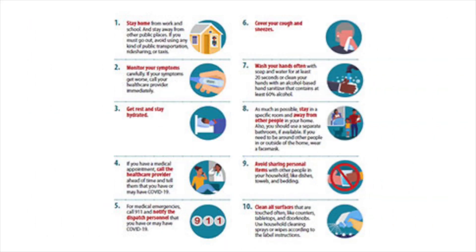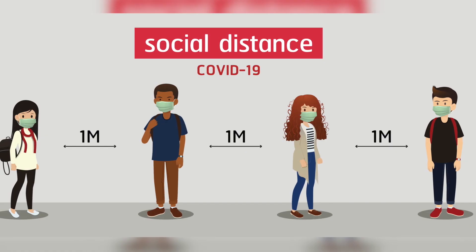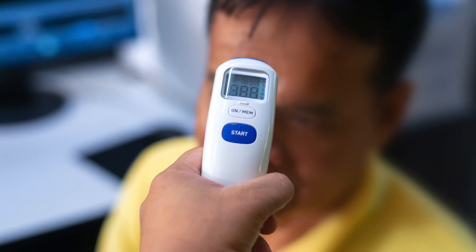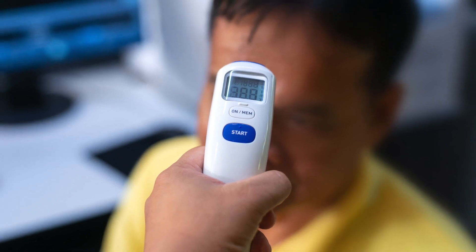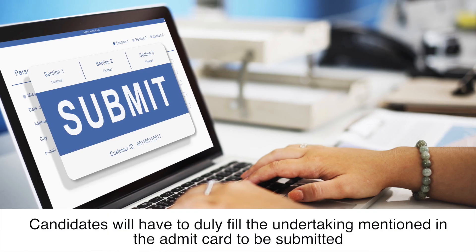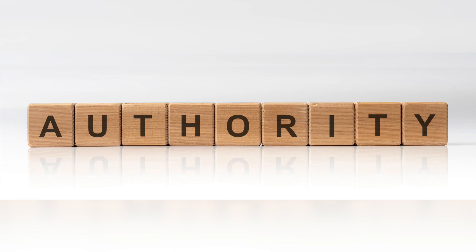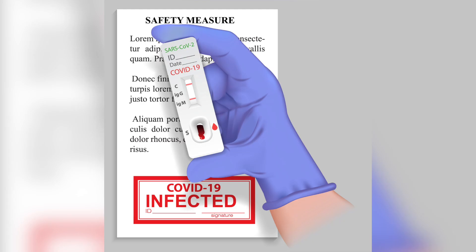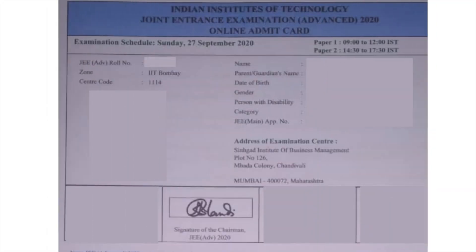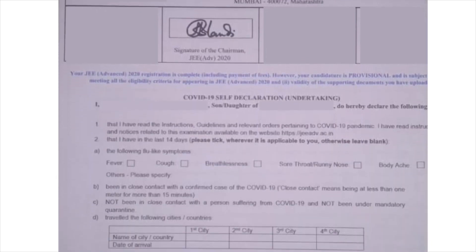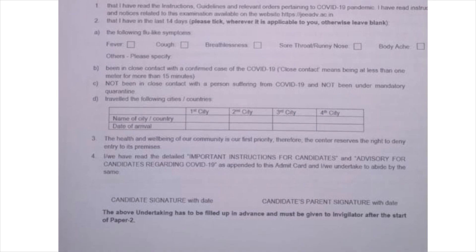COVID-19 related guidelines in JEE Advance Exam Centre: Candidates will have to follow the social distancing norms at the exam centre. There will be a temperature check at the entry gate using thermoguns. Candidates will have to duly fill the undertaking mentioned in the Admit Card to be submitted to the exam centre authorities, so that COVID-19 infected or suspected candidates can be segregated and seated in separate rooms. The JEE Advance Admit Card 2020 shall provide the time of reporting, compliance with which will help candidates reach the exam centre in order to avoid crowding.